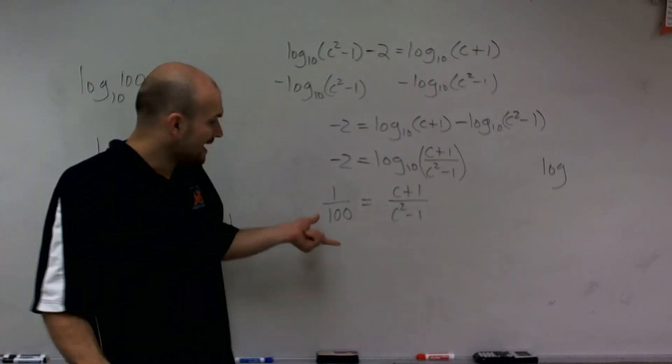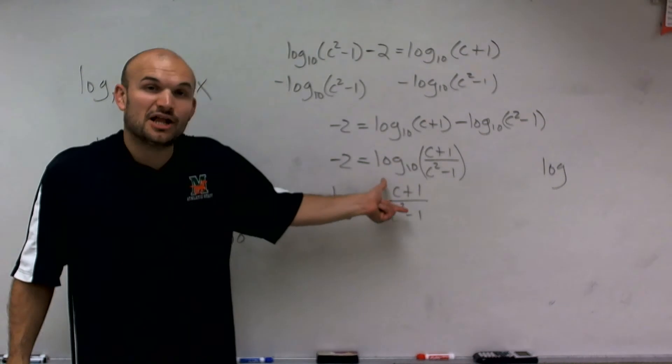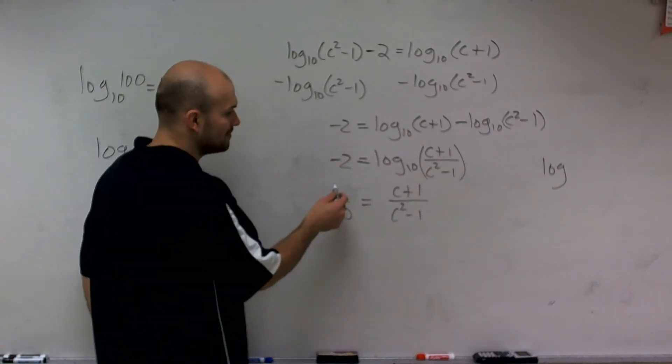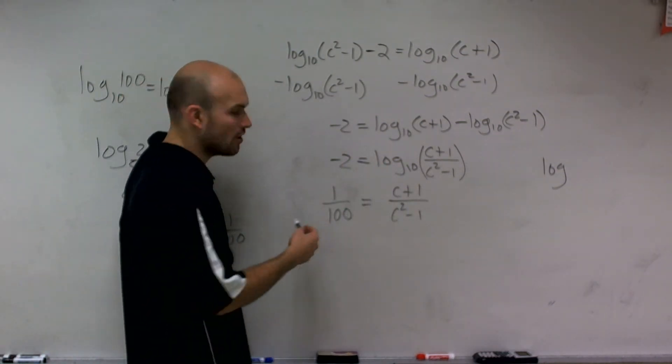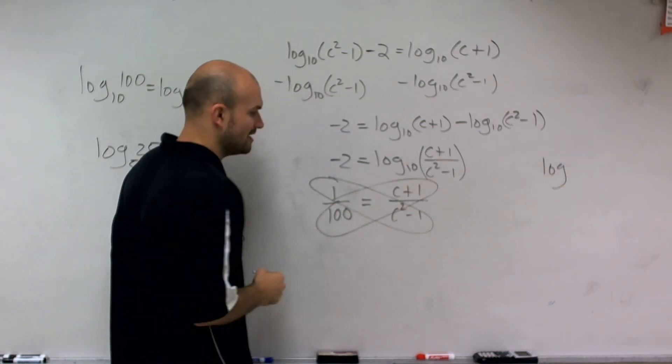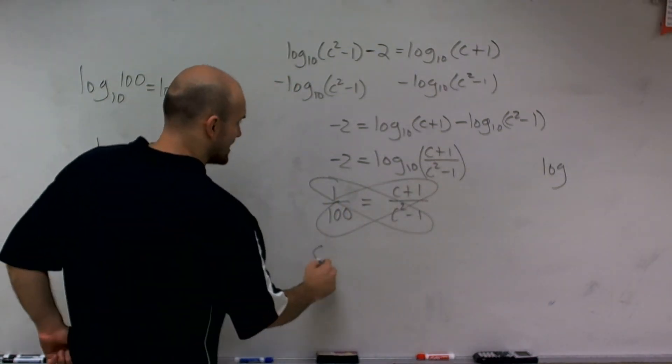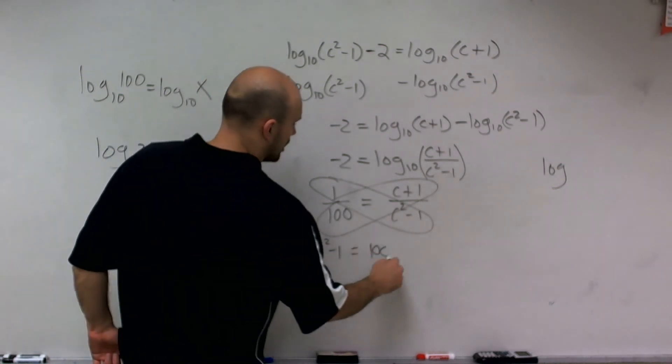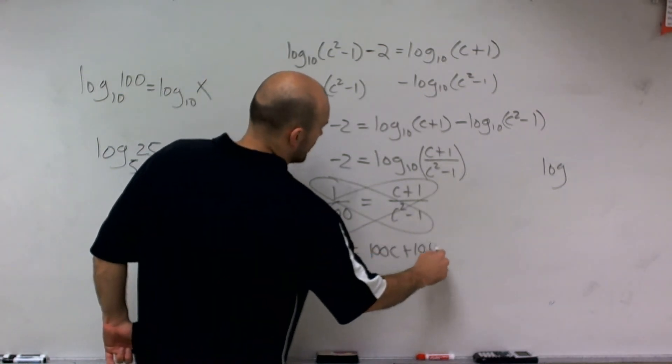So now I have a fraction equal to another fraction, which is a proportion. And proportions we can apply cross multiplication. So therefore, by applying cross multiplication, I have c squared minus 1 equals 100c plus 100.